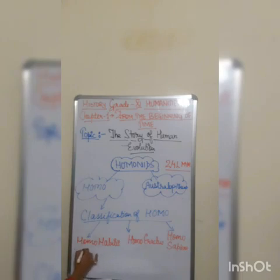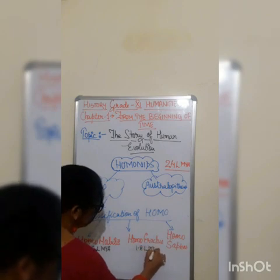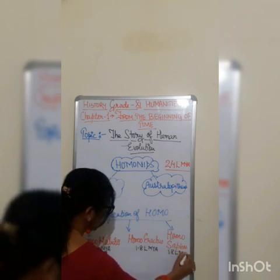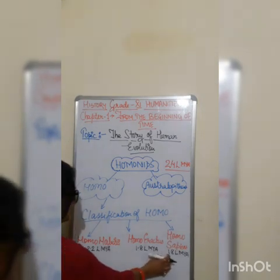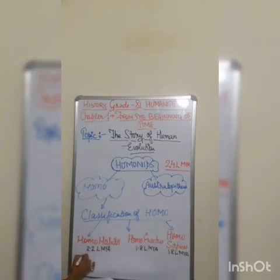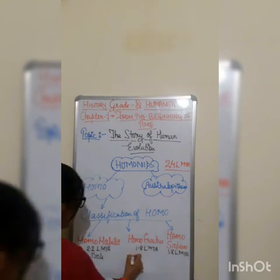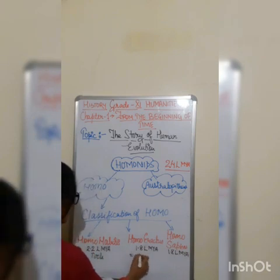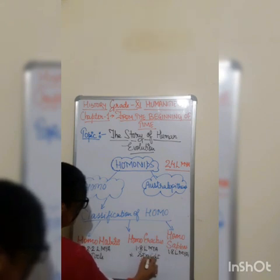Homo habilis evolved around 2.2 lakh years ago. Homo erectus evolved around 1.8 lakh years ago, and homo sapiens also evolved around 1.8 lakh years ago. These three all have unique features. Homo habilis were the first human beings who started using tools in their daily life. Homo erectus had a straighter body posture.